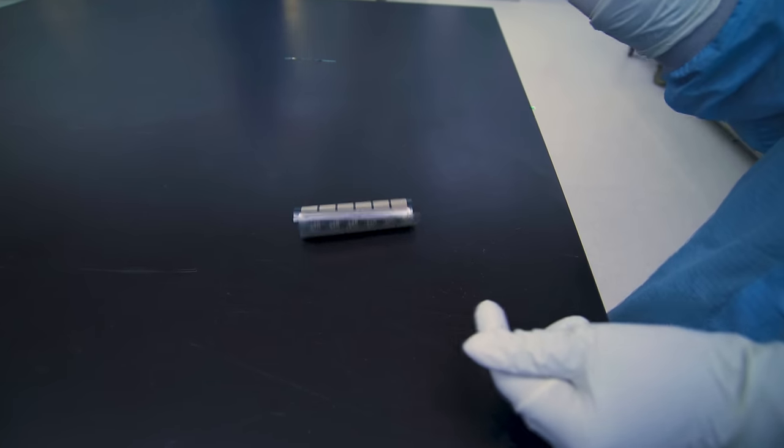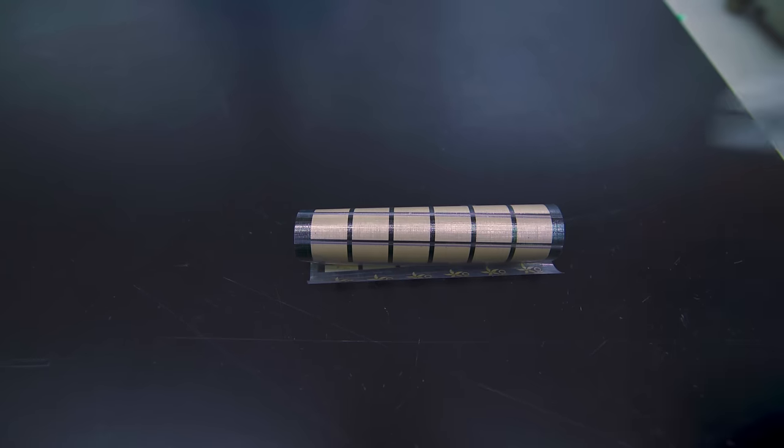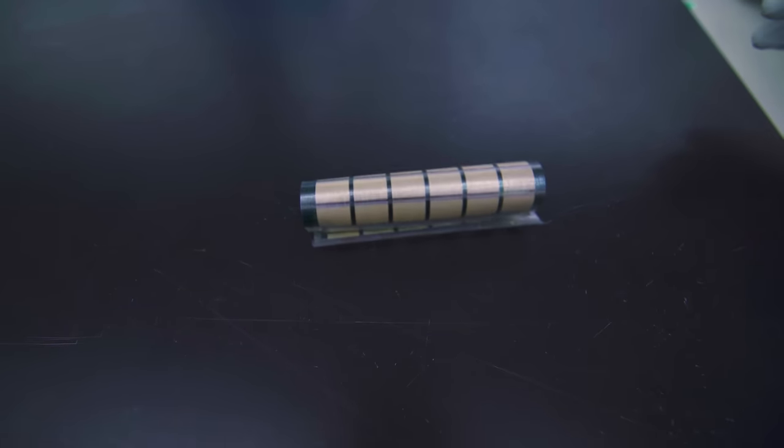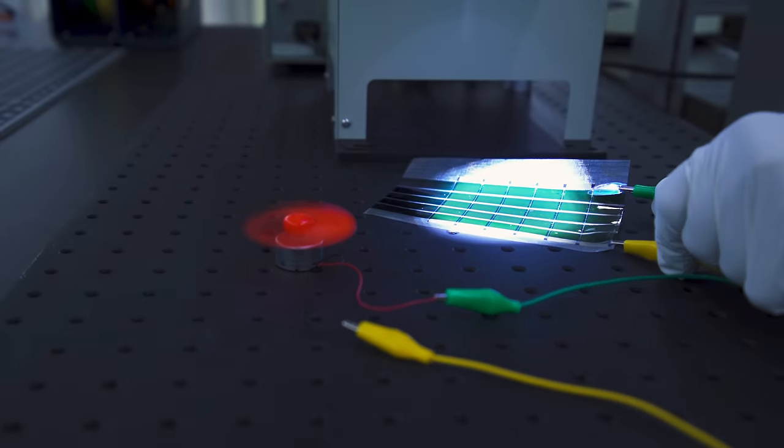They also tested the mechanical durability of the device and found that even after rolling and unrolling the fabric solar panel more than 500 times, the cells still retained more than 90 percent of their initial power generation capabilities.